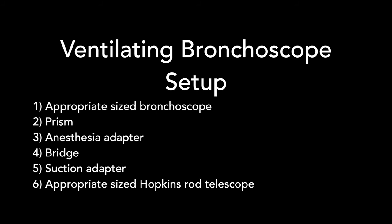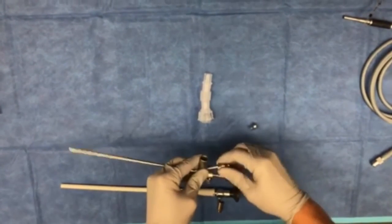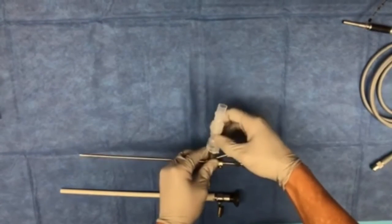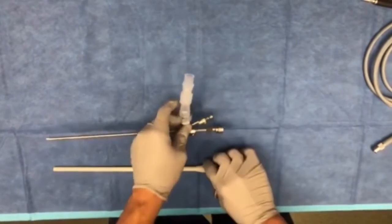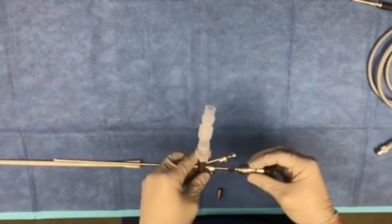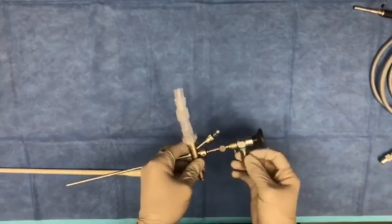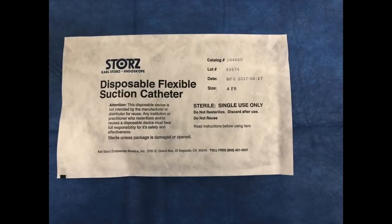The ventilating bronchoscope has these attachments. The following video explains how to put the ventilating bronchoscope together appropriately. It should be noted that a disposable flexible suction catheter, either a 4 French or 6 French in size, should be available in case suctioning of the trachea or bronchi is necessary during bronchoscopy.